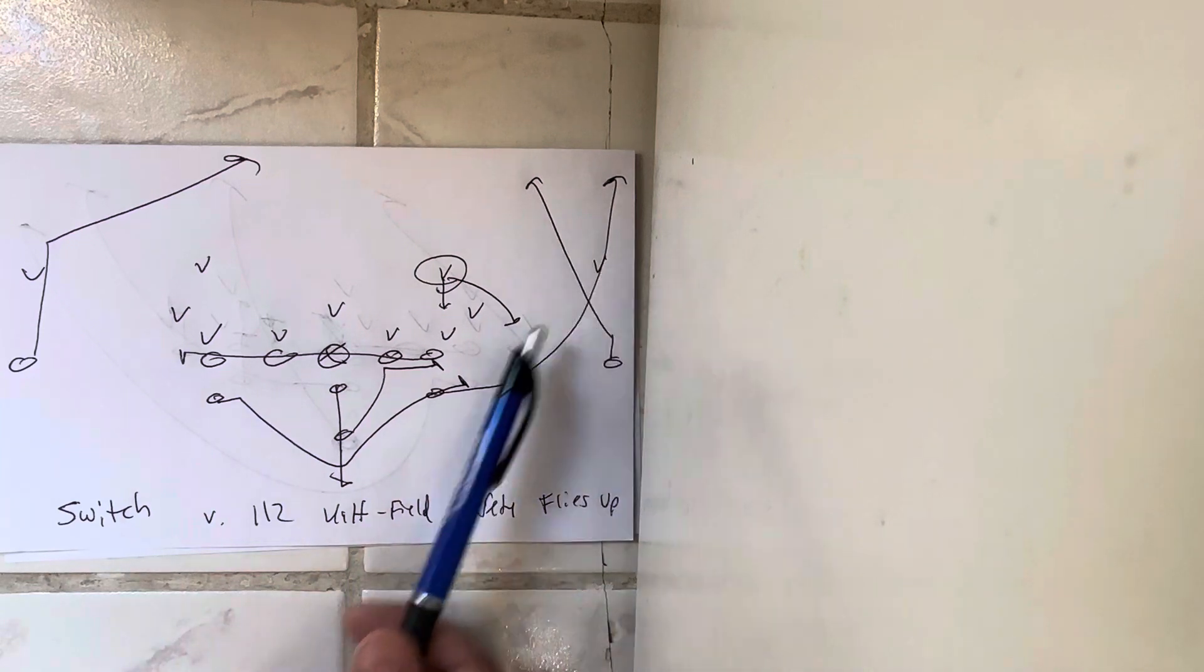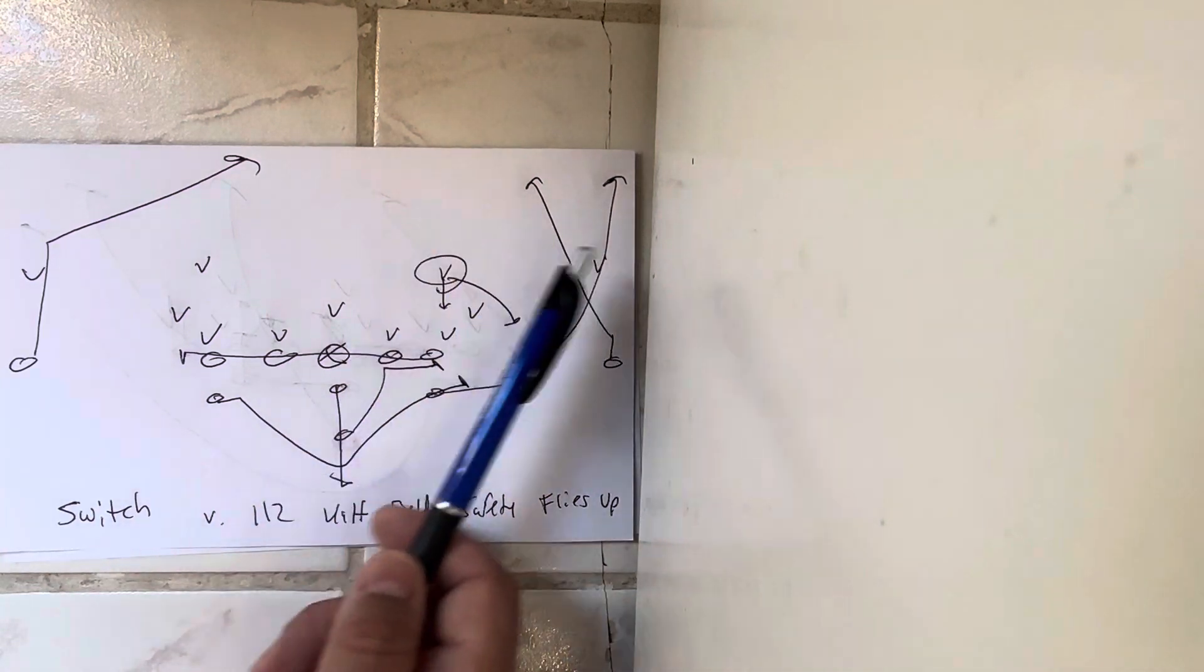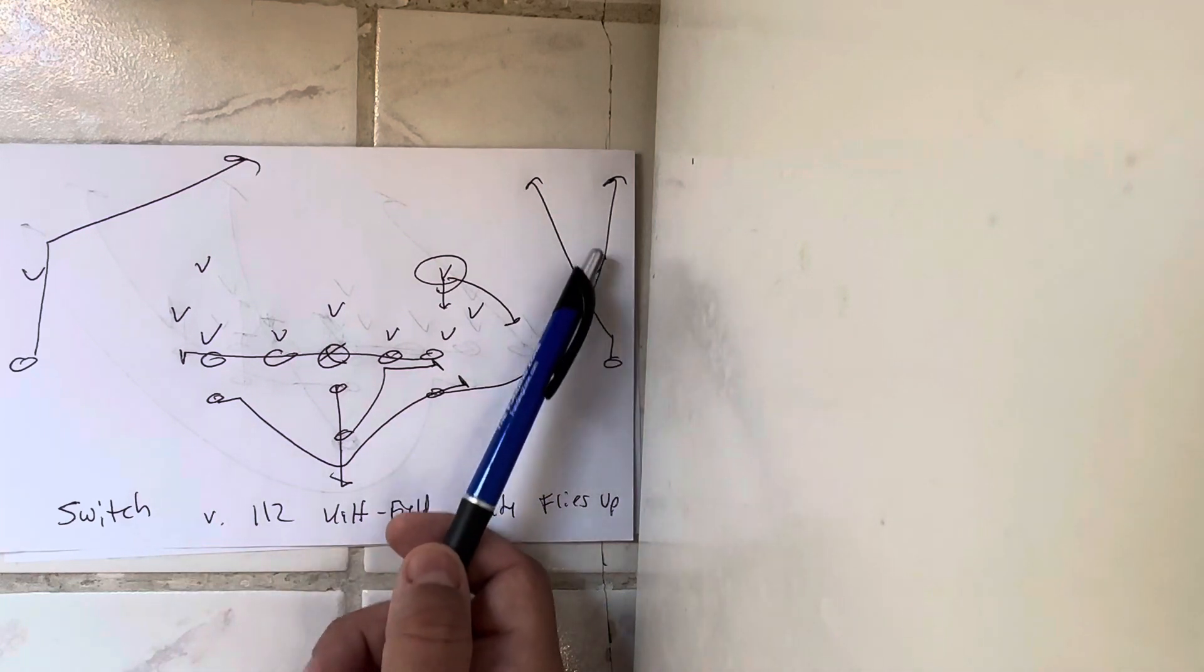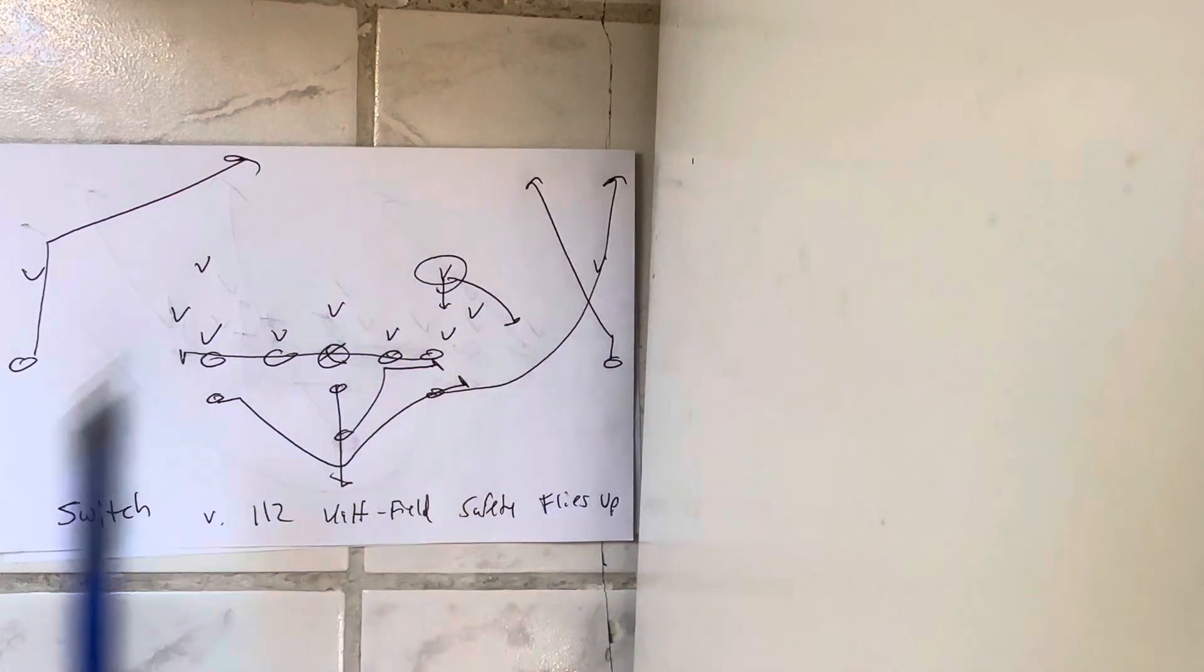Quarterback's going to five-step drop and he reads the corner. If the corner runs with the skinny, he throws the wheel. It's that simple. If the corner stays with the wheel, he's going to hit the skinny.